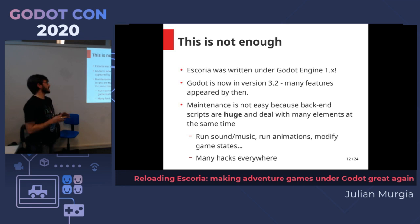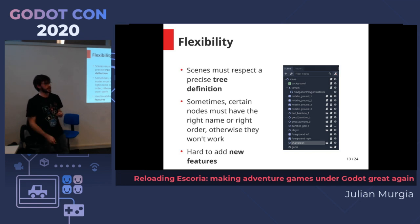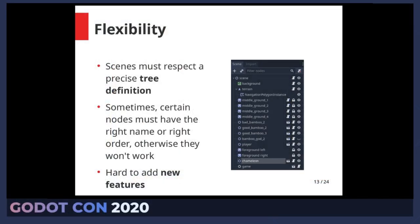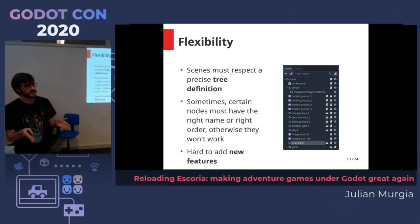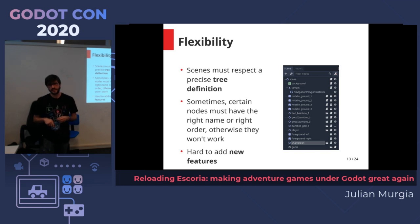Currently there are many hacks everywhere, and this is no good. To show you an example: this is a scene in Godot that defines a room in your game. You have the background — a TextureRect — which handles all user clicks using the provided script. You also have the terrain with a NavigationPolygonInstance defining the area your playable character can walk in. And all the other elements: middle ground with non-interactive stuff, and interactive items.